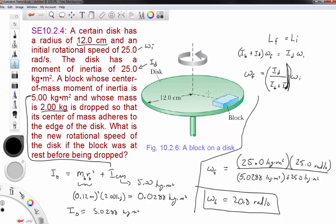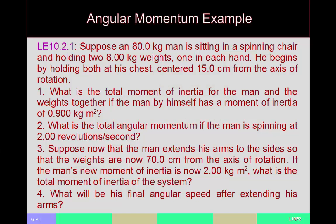So as you drop masses onto the disc you tend to slow down its rate of angular rotation. Conversely, if you had a way of lifting these blocks off without accidentally applying a torque from friction, you would increase the rate at which this disc is spinning.